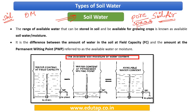These pore spaces can be large or small. The larger spaces are named macropores and the smaller ones are named micropores. Soil water and soil air compete to occupy these pore spaces. So whenever there is a greater amount of soil water, the amount of soil air is less, and vice versa.